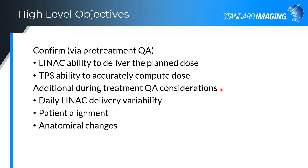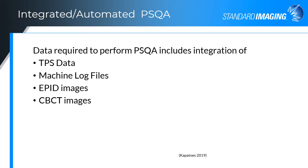In the early days of IMRT, in some cases, the deliverability of the plan was in greater question than it is today. After the treatment planning system is well commissioned, the TPS ability to accurately compute dose is confirmed for typical clinical plans. These two items are the focus of pre-treatment QA, but don't include additional during-treatment QA considerations. LINACs have complex feedback systems with integrated tolerance levels, but still have daily LINAC delivery variability. The patient alignment and anatomical changes occurring during treatment carry uncertainty essential for consideration in your QA program.